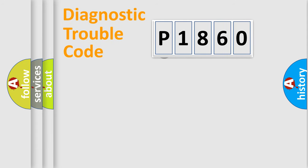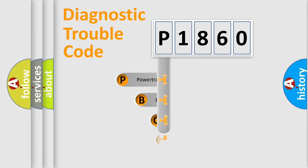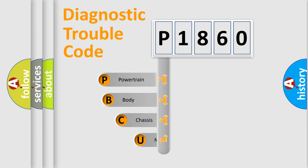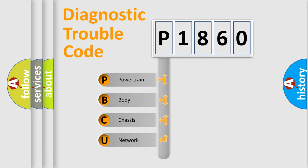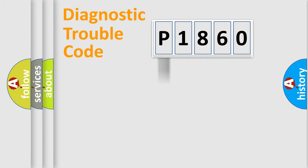First, let's look at the history of diagnostic fault code composition according to the OBD2 protocol, which is unified for all automakers since 2000. We divide the electric system of an automobile into four basic units: Powertrain, Body, Chassis, and Network. This distribution is defined in the first character of the code.